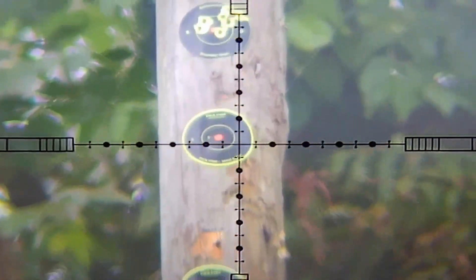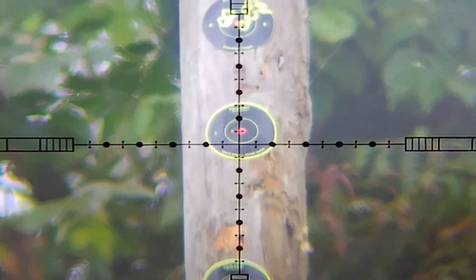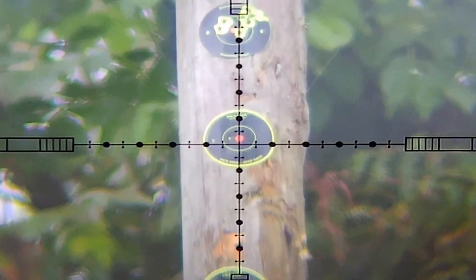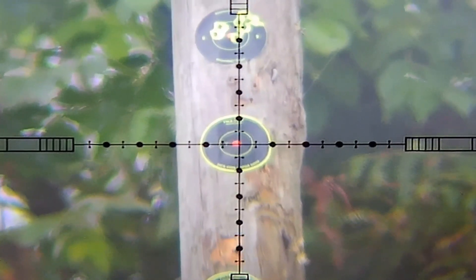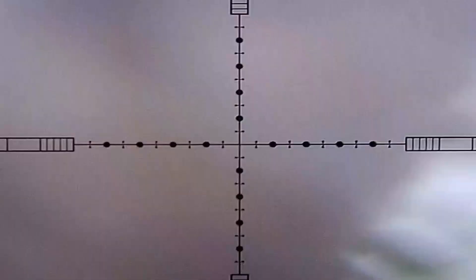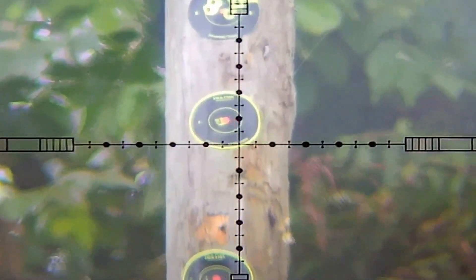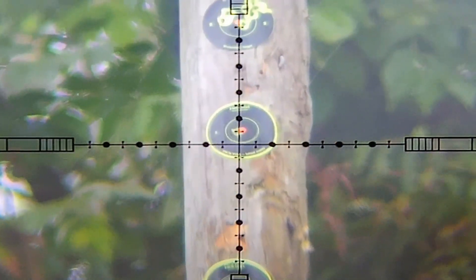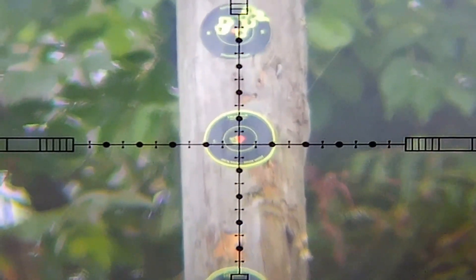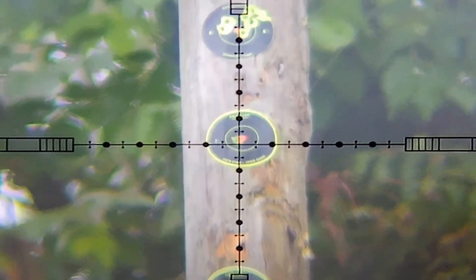Right, this is where I changed my pellets. I said I was on 10.3 grains, changed to 8.4 for the flatter trajectory. This is just zeroed at 30 meters. I was actually shooting this just resting on my knee.